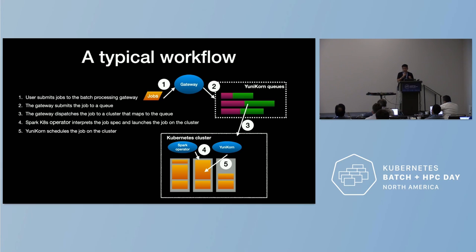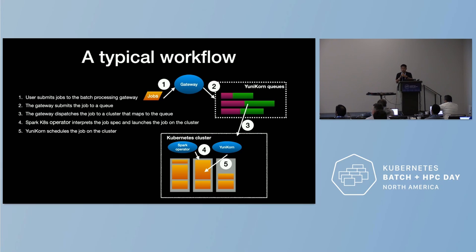In our design, a job can only run on one cluster — it does not cross clusters — avoiding a lot of complicated scenarios when one job spans multiple clusters. When the job is dispatched to a dedicated cluster, the Spark operator interprets the job spec and launches the job. Once launched, the job creates a bunch of pods, and the Unicorn scheduler watches the pending pods, schedules them on the cluster, and respects the queue settings — so everything comes together.